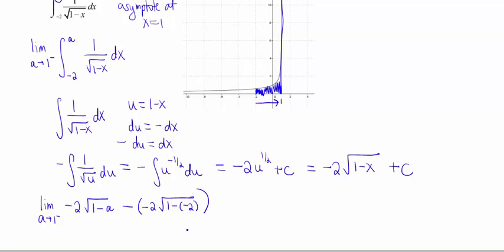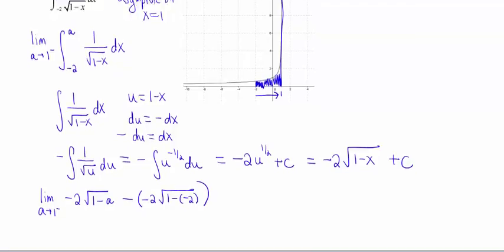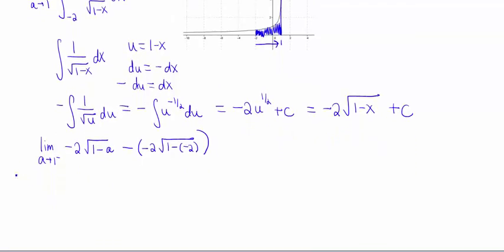Ooh, lots of negatives floating around here. Okay, so let's take a look at what happens with our first piece here. So the limit only applies to the first piece, because only the first piece has an a in it.